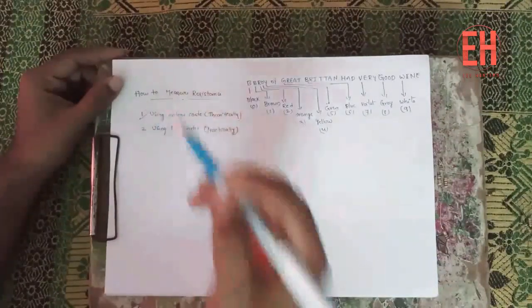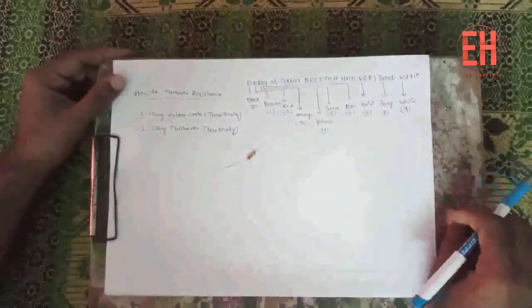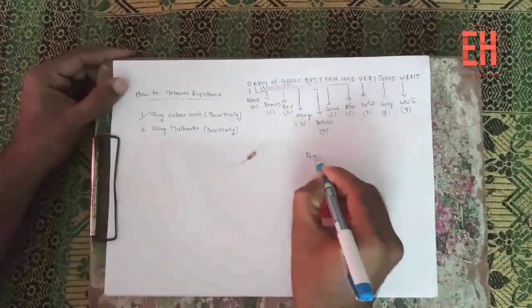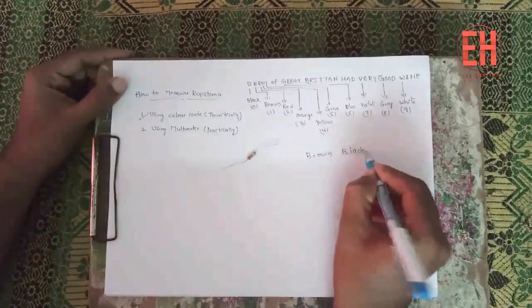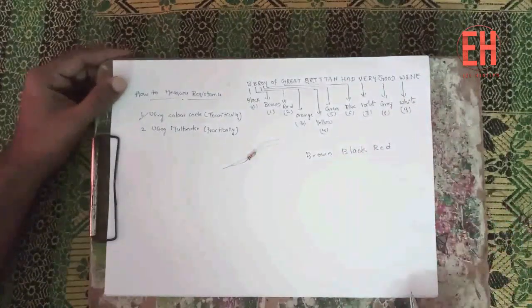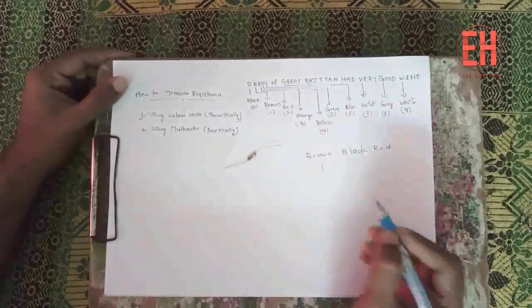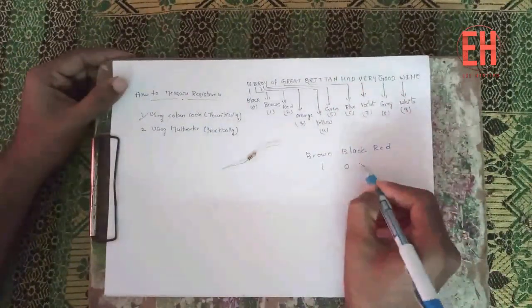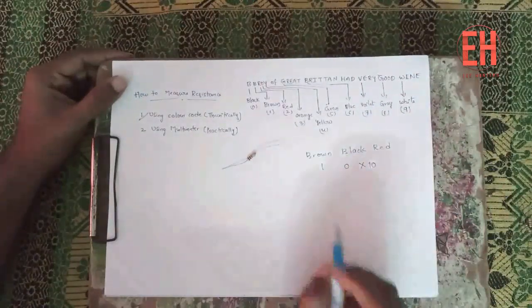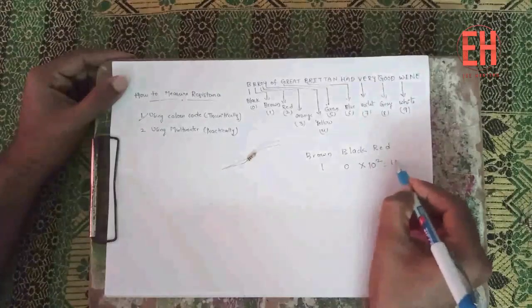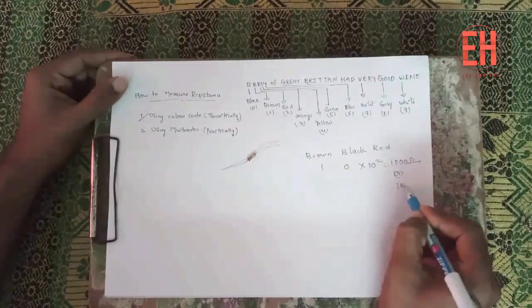Let us go for using color code. I have a resistance with colors brown, black, red. Brown means 1, black means 0, into 10 to the power of 2 — that gives 1000 ohms, or 1 kilo ohm.